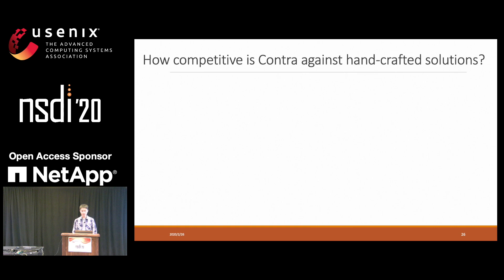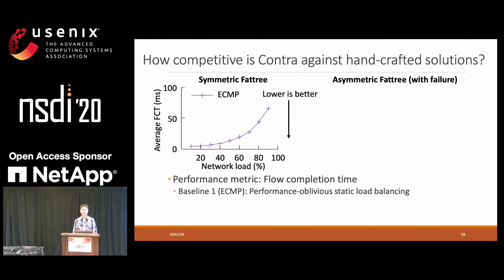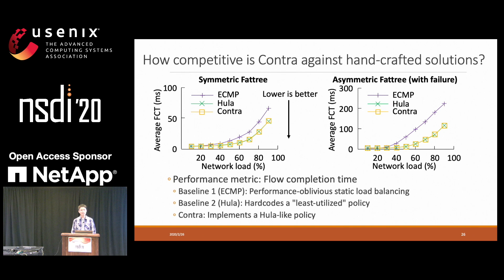We also evaluated the performance of Contra against handcrafted solutions. On Fat-tree, there are two scenarios: one is symmetric Fat-tree with no link failure, the other is asymmetric Fat-tree where we fail one link. We use flow completion time as the performance metric, so lower is better. The first baseline is ECMP, which randomly selects paths for every flow — a performance-oblivious load balancing. The second baseline is Hula, which hard-codes a least-utilized policy in the data plane. Our solution, Contra, implements a Hula-like policy. Both Contra and Hula outperform ECMP because they are performance-aware. The improvement is more significant at higher workloads and in asymmetric Fat-tree, and Contra is competitive with Hula in both cases.